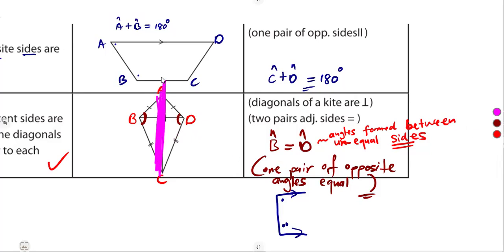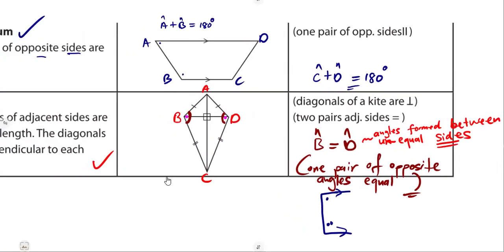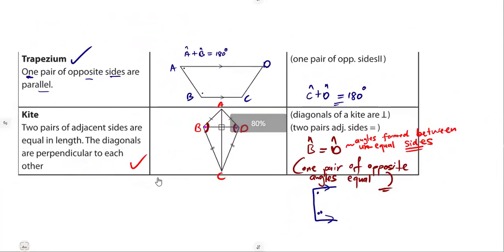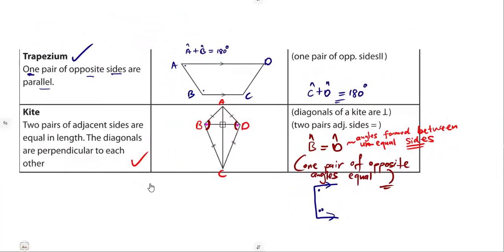Angles A and C are not equal to B and D — please be very careful to identify which angles are equal. Now you know the properties of each quadrilateral. With this information, combined with your grade 8 knowledge, you can answer as many questions as you can. We'll meet in another class to work through typical exam-style questions.